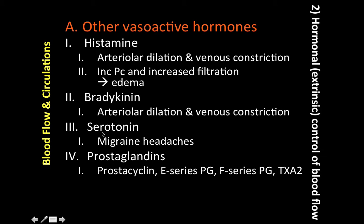The third vasoactive hormone is serotonin, also known as 5-hydroxytryptamine. It causes arterial constriction and is released in response to blood vessel damage to help prevent blood loss — it causes constriction of the arterioles. Serotonin has also been implicated in the vascular spasm of migraine headaches, which is why many migraine patients are prescribed amitriptyline, which works via the serotonin pathway.